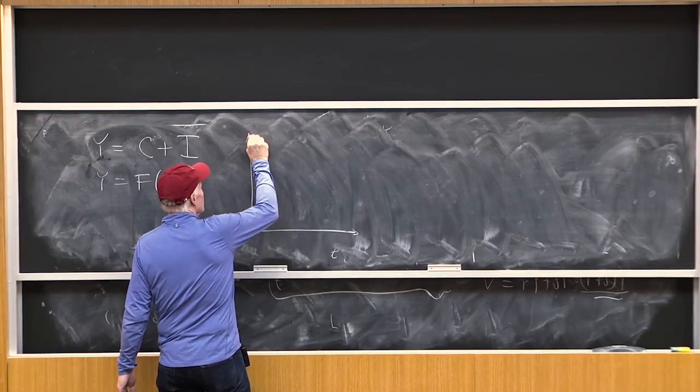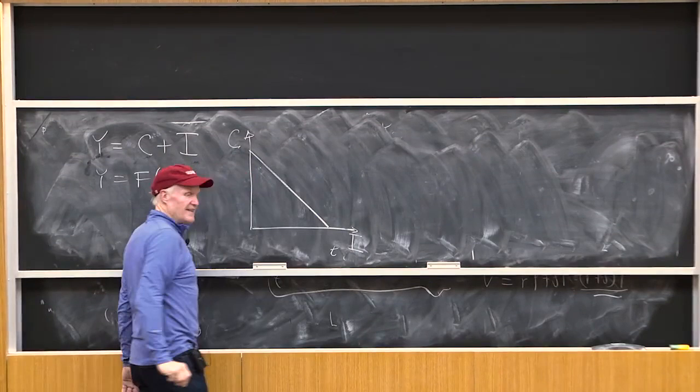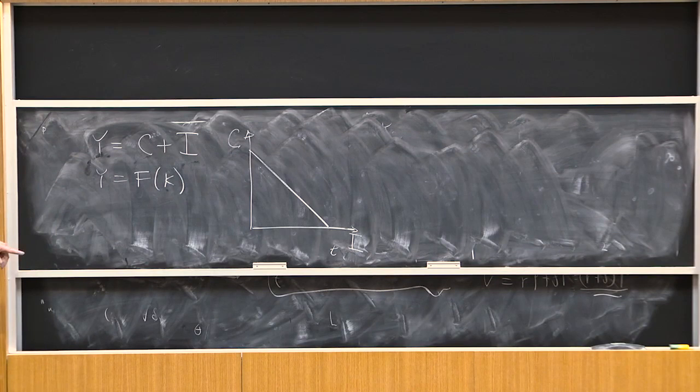If I thought about our production possibility frontier between I and C, it looks like that, right? That is, we can produce any combination of C and I that we want, as long as it adds up to F of K, right? Everybody agrees?